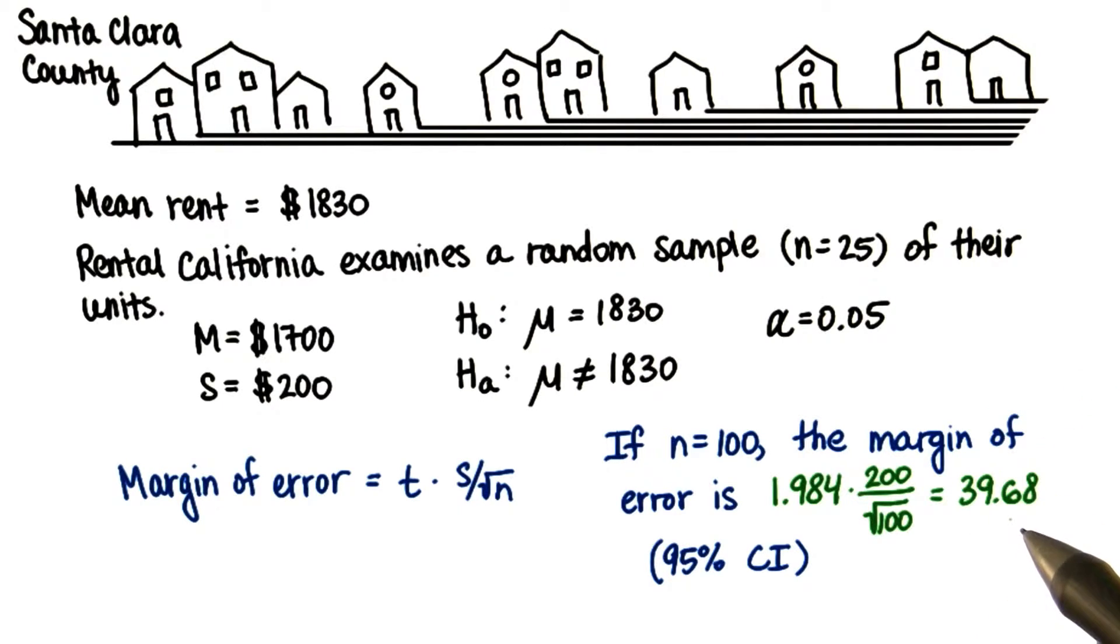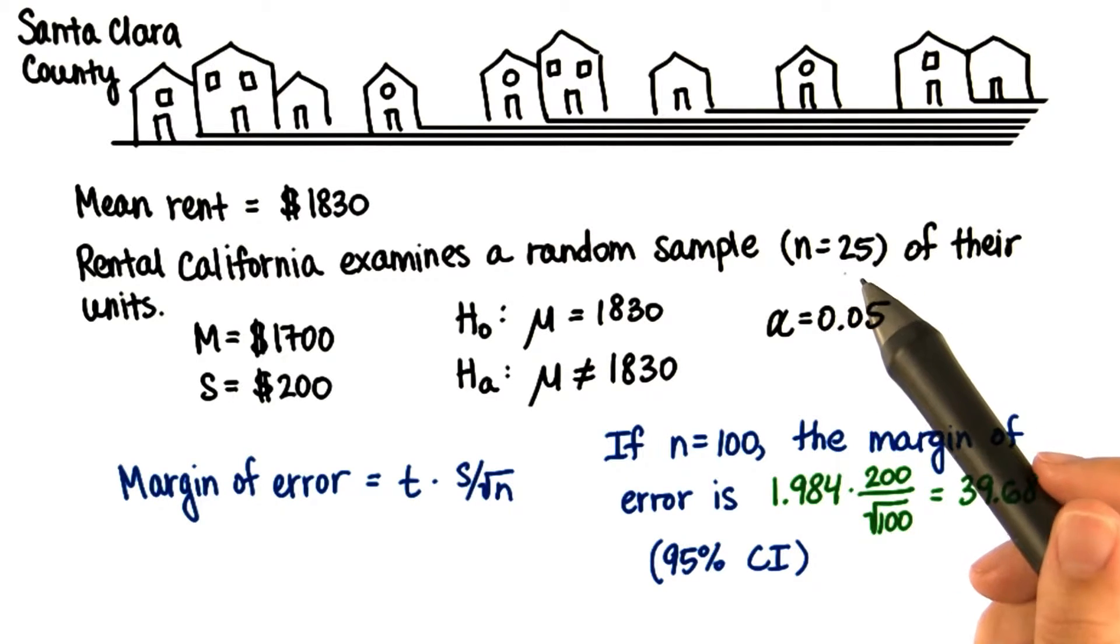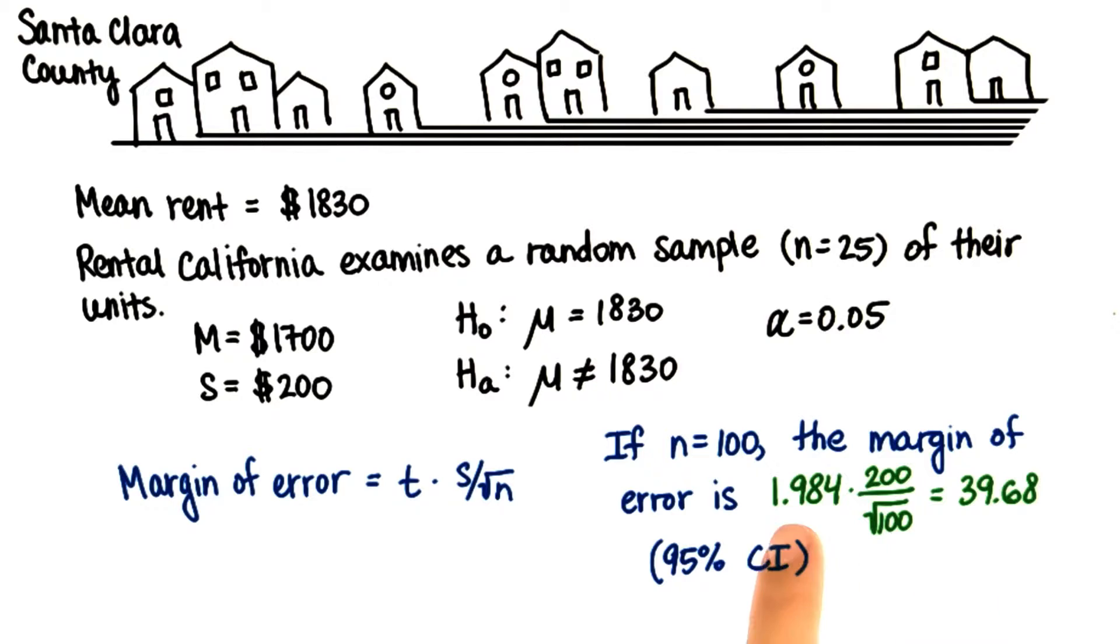Notice that now the margin of error got a lot smaller than it was before with a sample size of 25. Before, the margin of error was 2.064 times 200 divided by the square root of 25, which was 82.56.